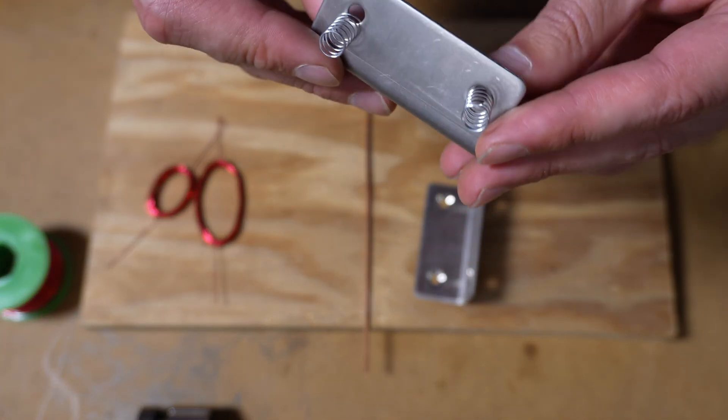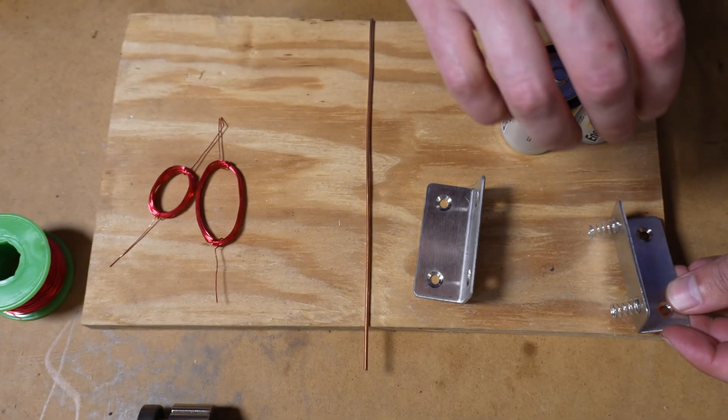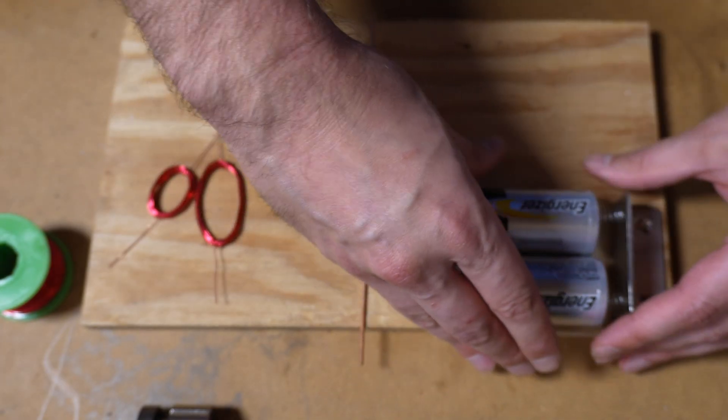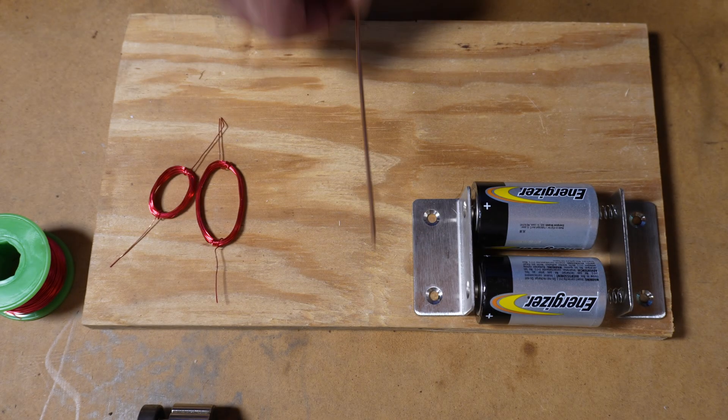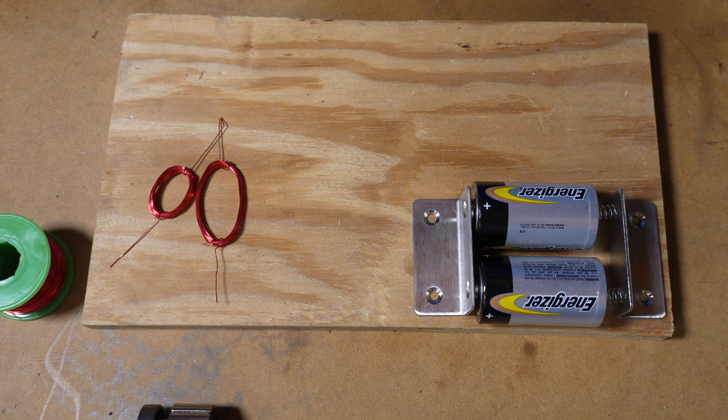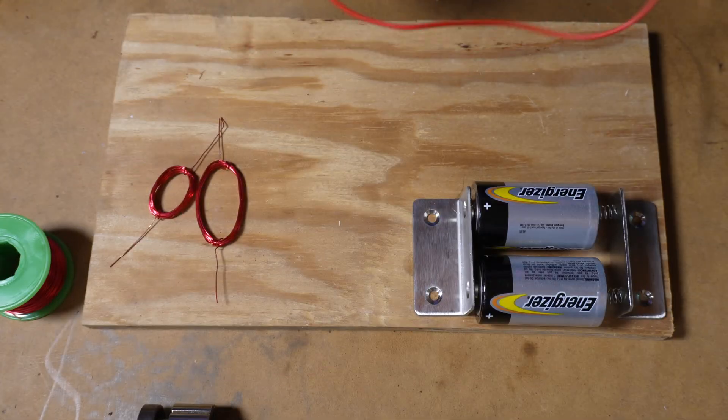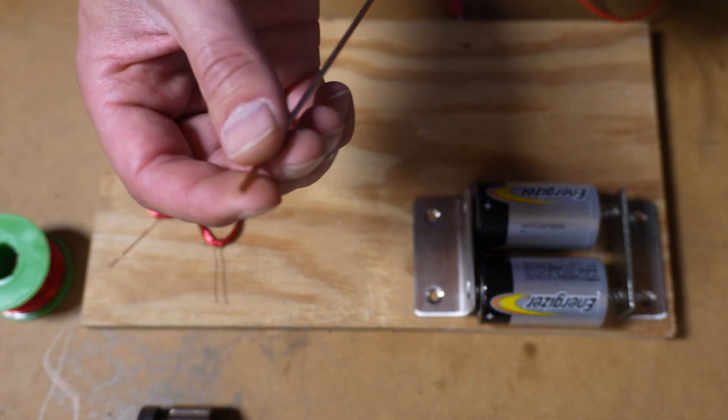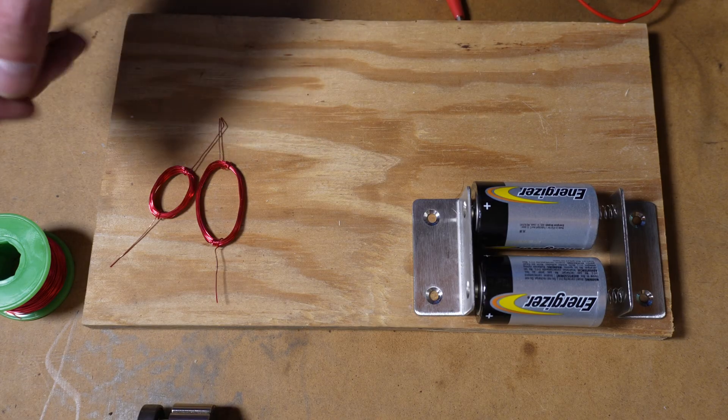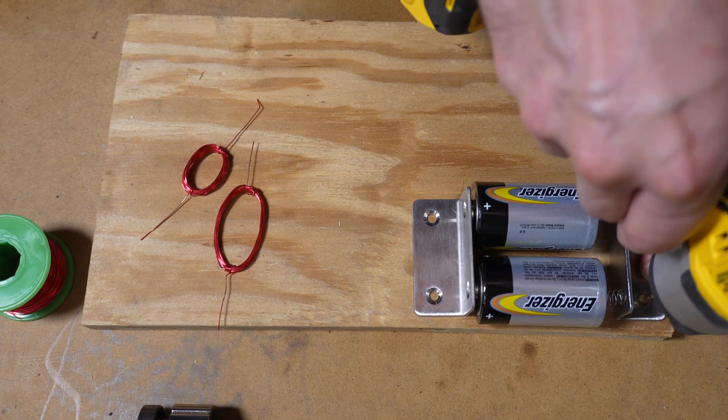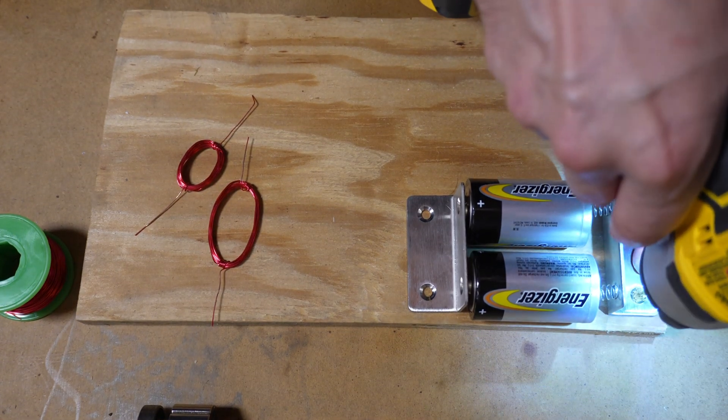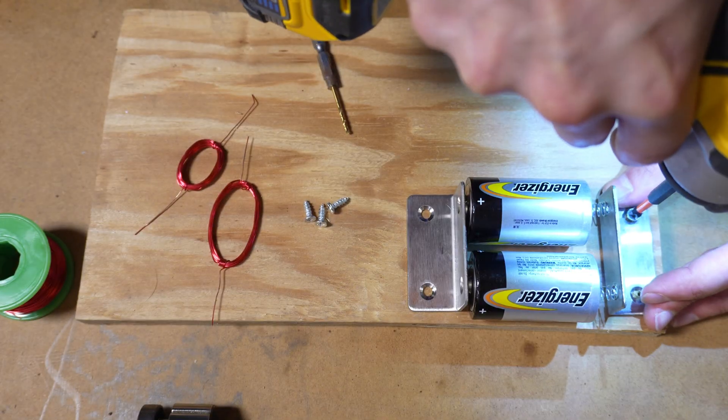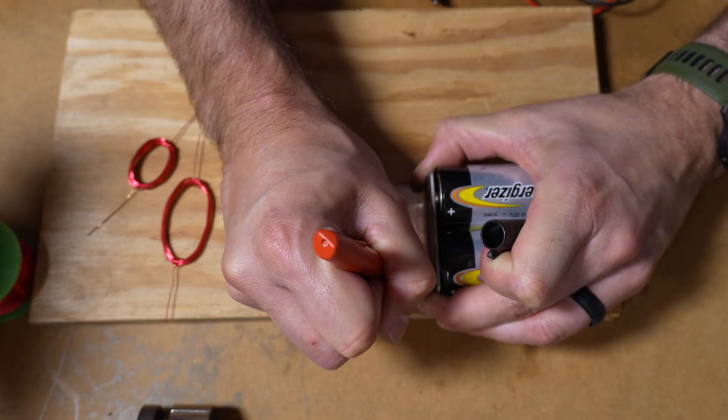I have two springs just kind of wrapped around the inside. We're gonna put these here. The springs are to give it some contact. I have some alligator clips that we're gonna use to clip on here, and then we'll use 12 gauge wire to create our posts.